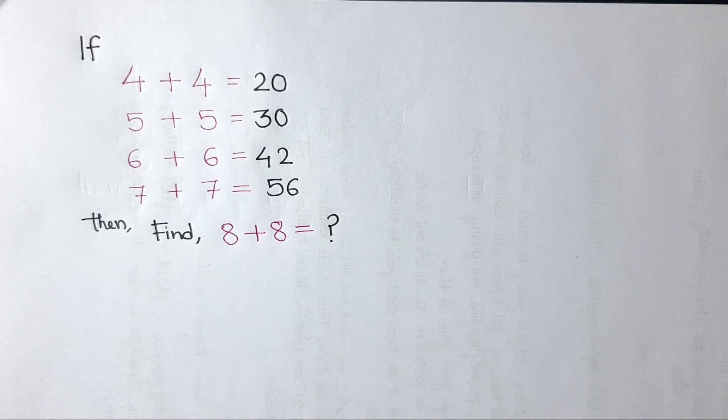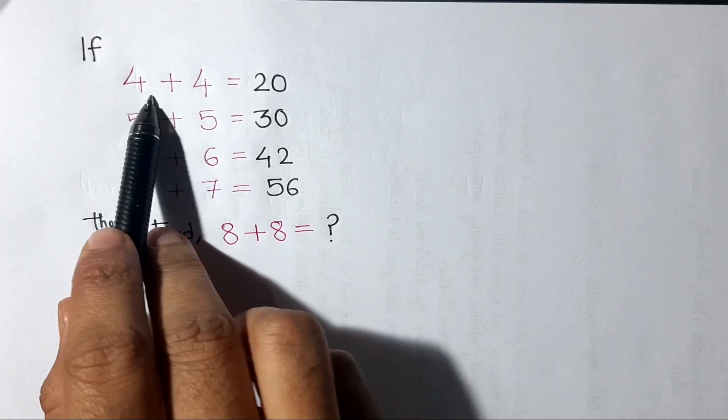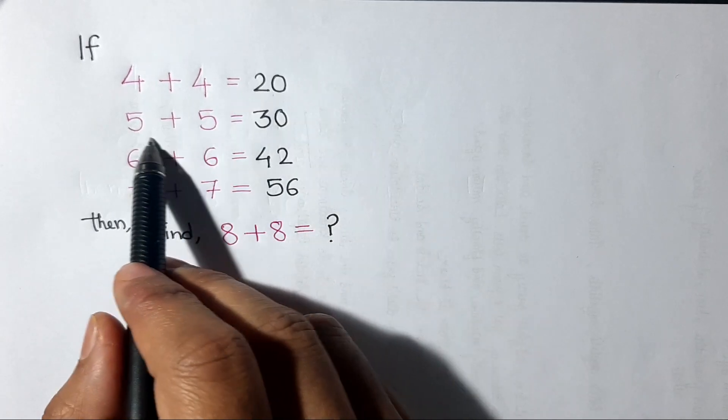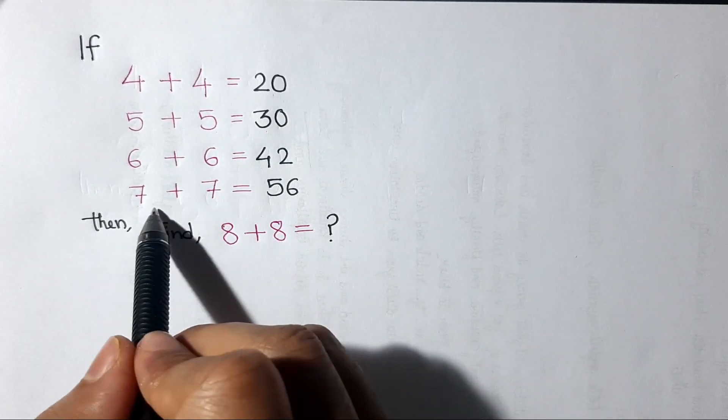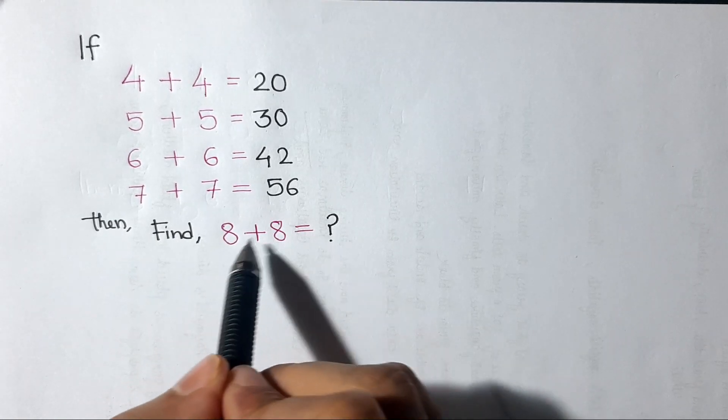Hello guys, welcome to my channel. Let's solve a reasoning problem. Given: if 4 plus 4 equals 20, 5 plus 5 equals 30, 6 plus 6 equals 42, and 7 plus 7 equals 56.